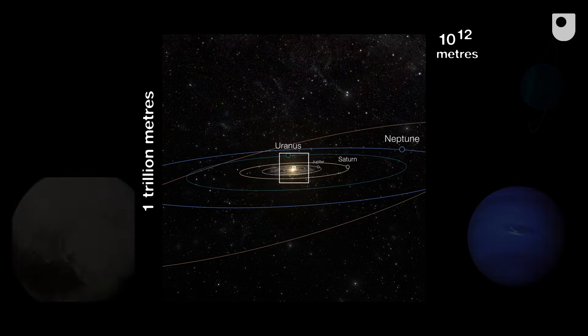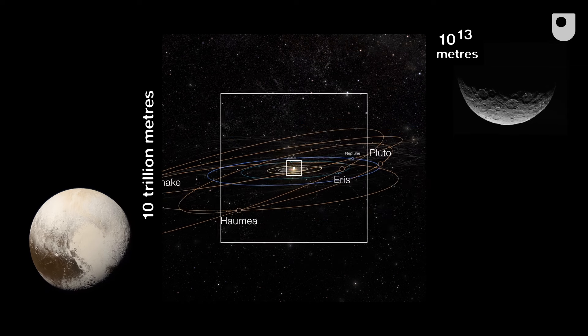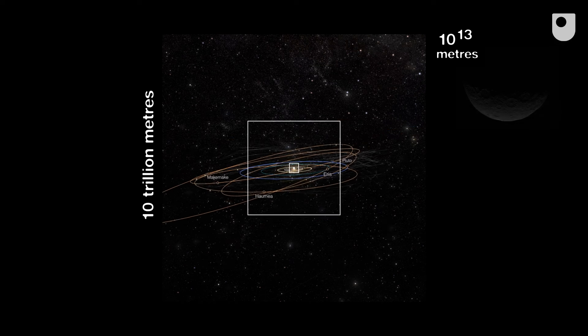There's the orbit of Pluto, one of the dwarf planets of the Kuiper belt. Ten to the thirteen metres, and we're moving out of the solar system.